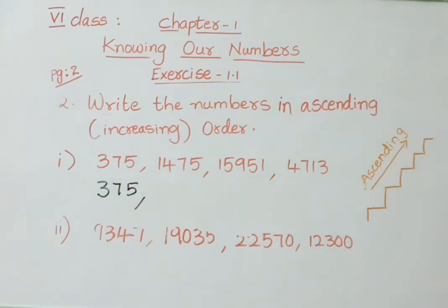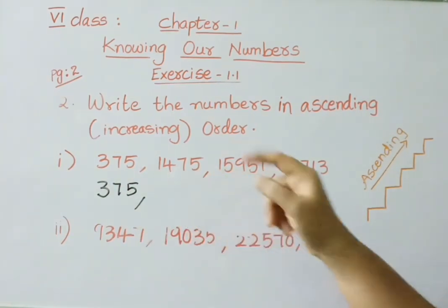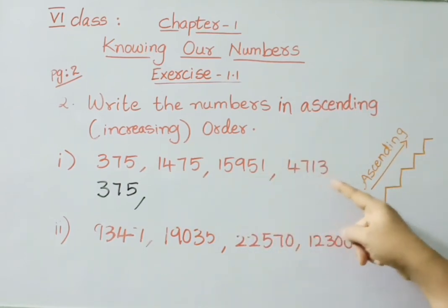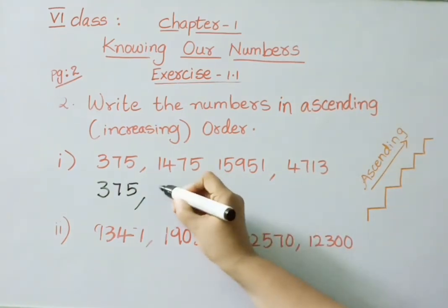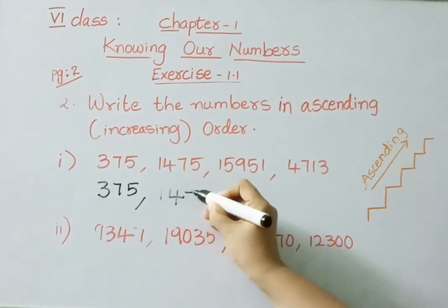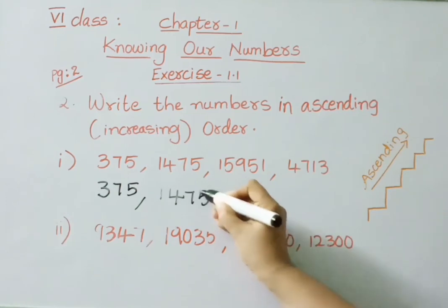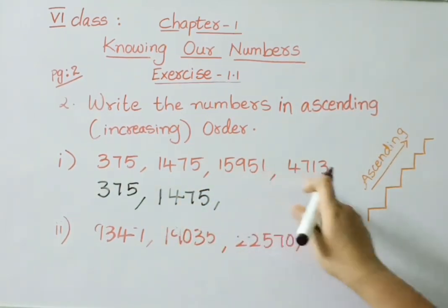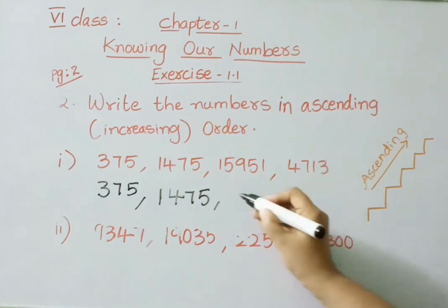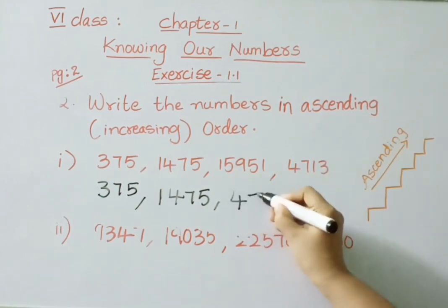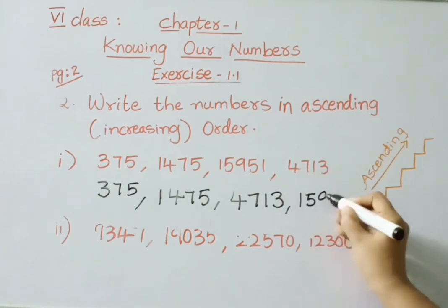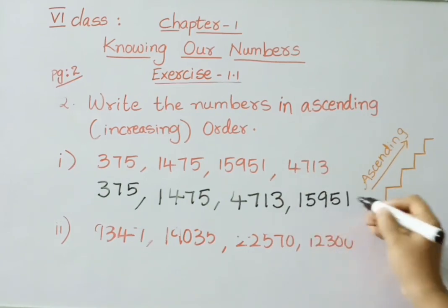From the remaining numbers 1,475, 15,951, and 4,713: the 4-digit number 1,475 is next smallest. Then comparing 5-digit and 4-digit — the 4-digit 4,713 comes next. So the ascending order is: 375, 1,475, 4,713, 15,951.